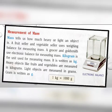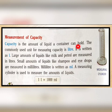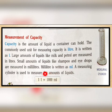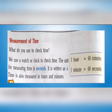After mass, we have measurement of capacity. Capacity is the amount of liquid that a container can hold. The commonly used unit for measuring capacity is liter. Small amounts of liquids are measured in milliliters, written as 'ml'. A measuring cylinder is used to measure amounts of liquid.